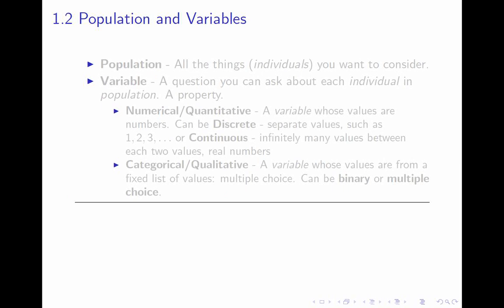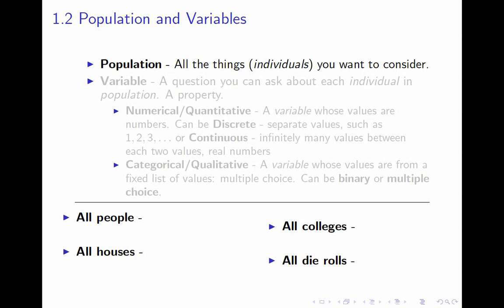There is a general framework that everything in this course follows from the first day to the last. We will always be considering a population. A population is the collection of all things — called individuals — that you want to consider. Your population might be all people, all houses, all colleges, all possible rolls of a given die, or all possible samples of a hundred people from a thousand-person town. Usually these involve the word 'all.'